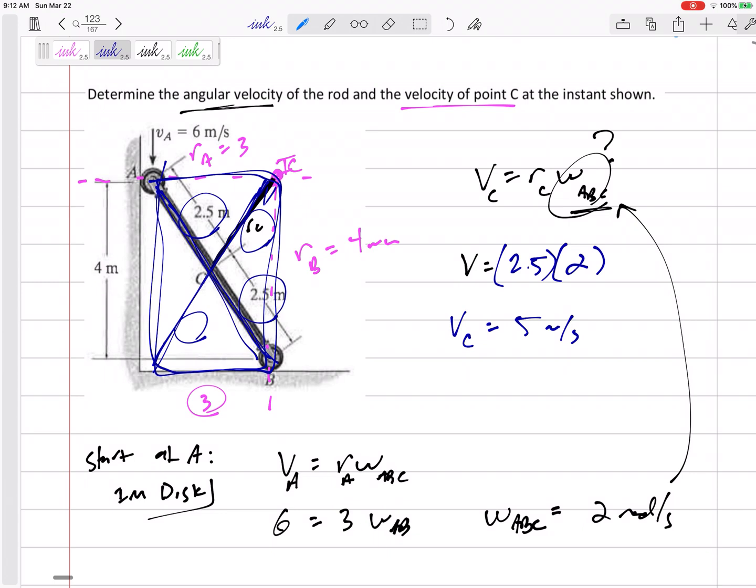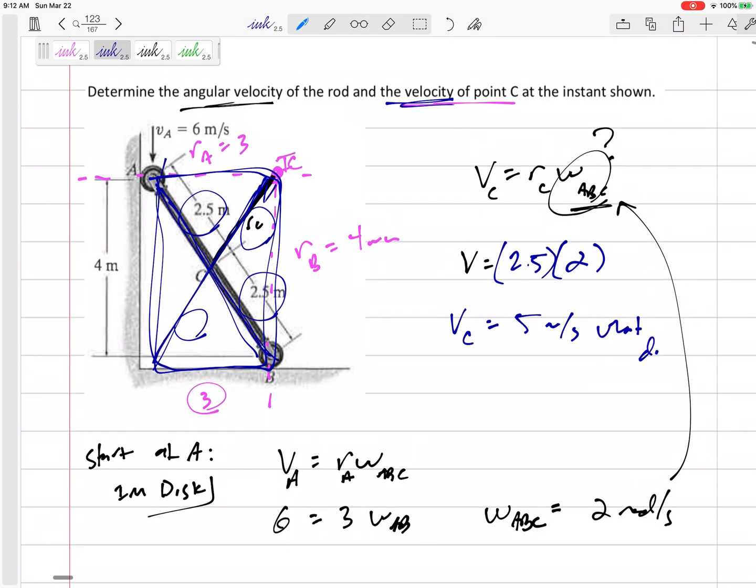But that's the magnitude. If it just asks for the velocity, I really kind of want an i and j. So let's really look at this. What direction would this velocity be?